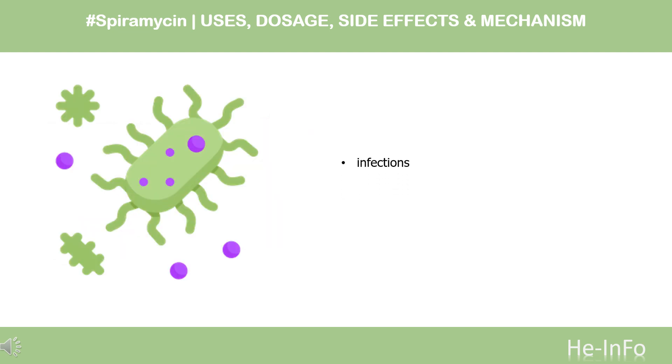What is spiromycin used for? Spiromycin is a macrolide antibiotic for the treatment of various infections.